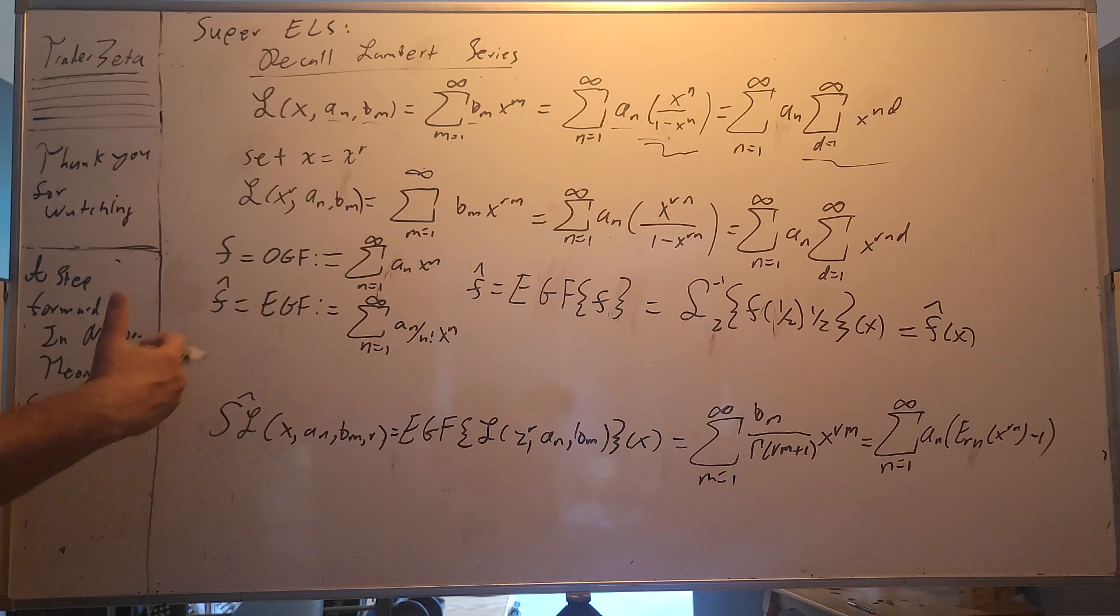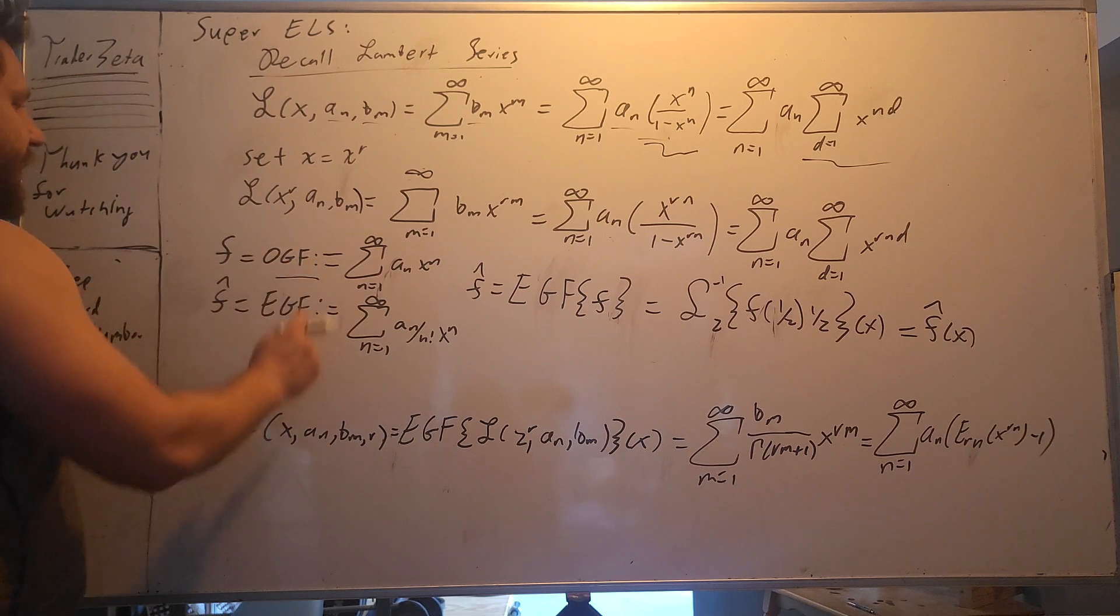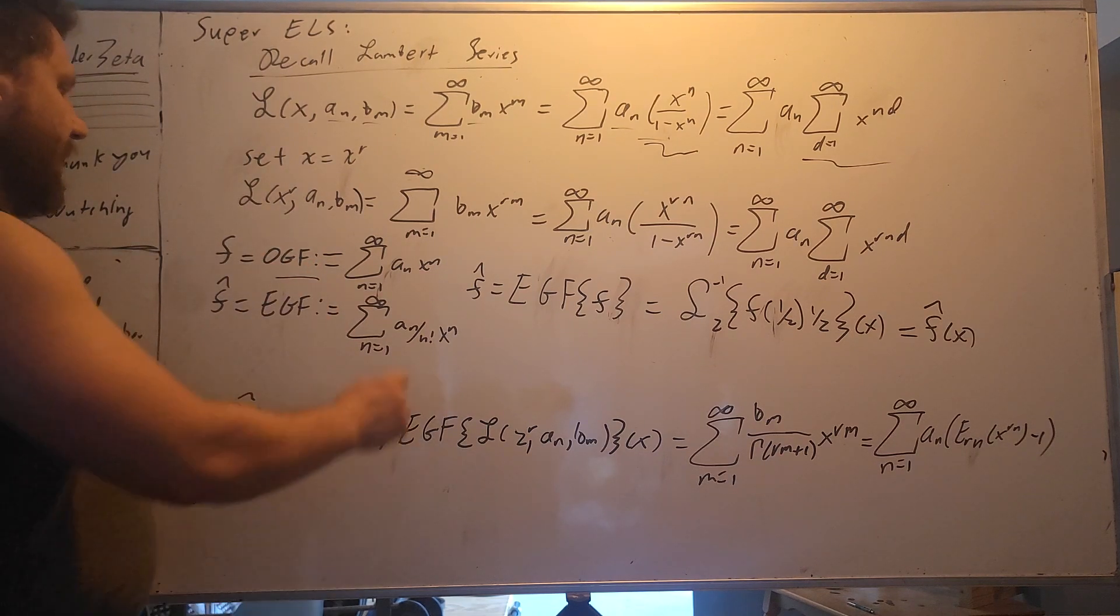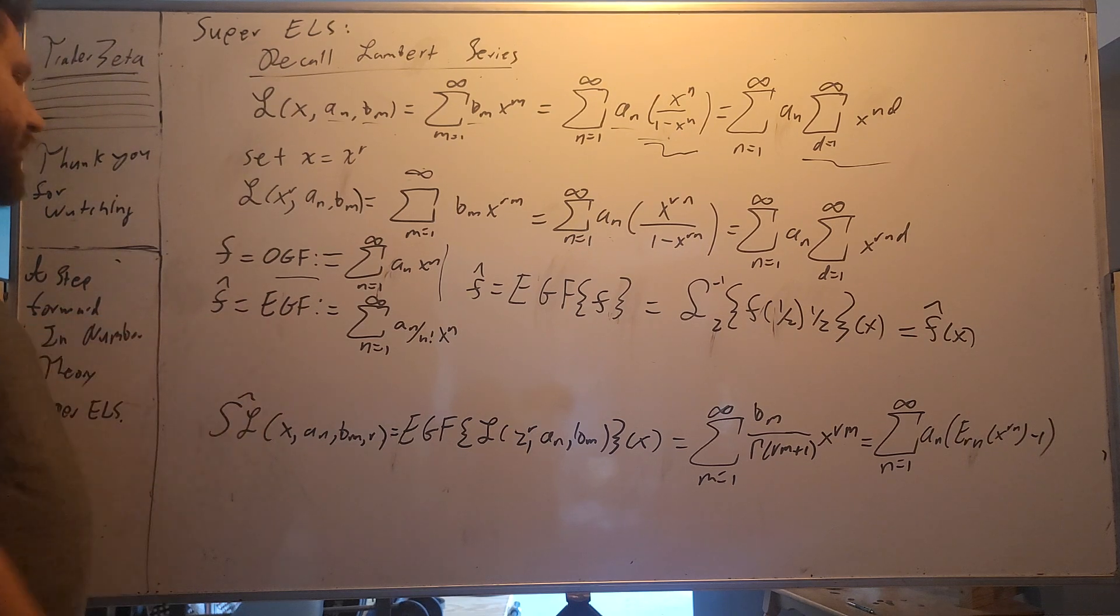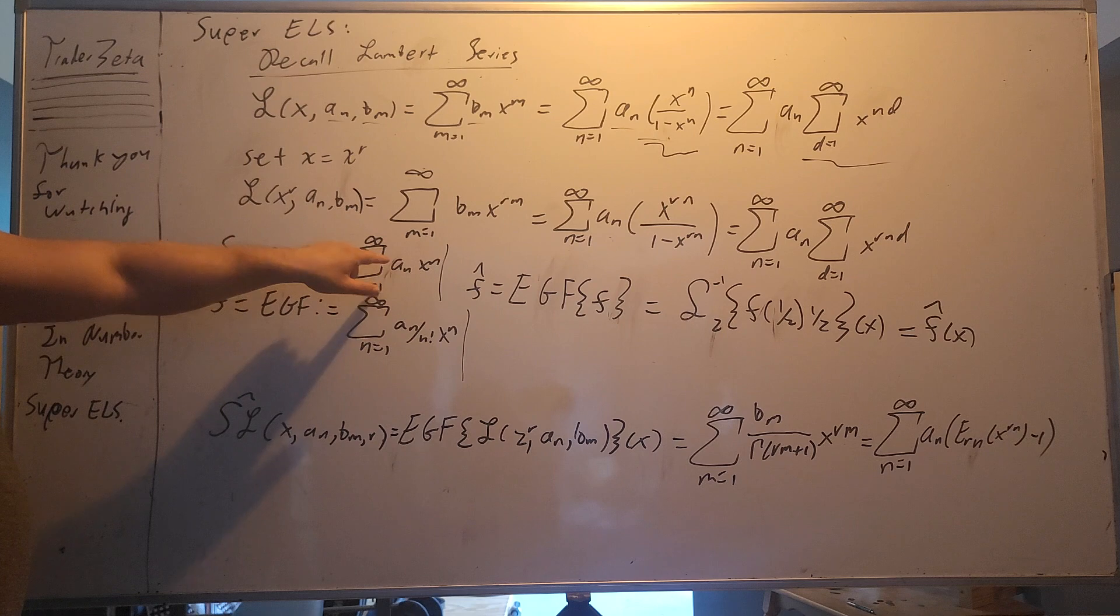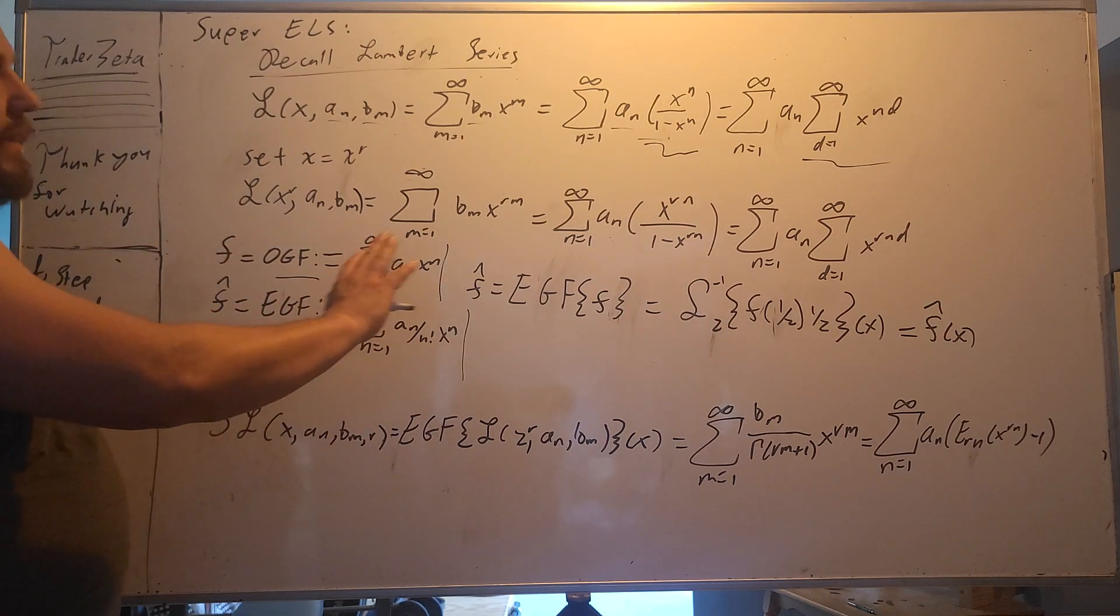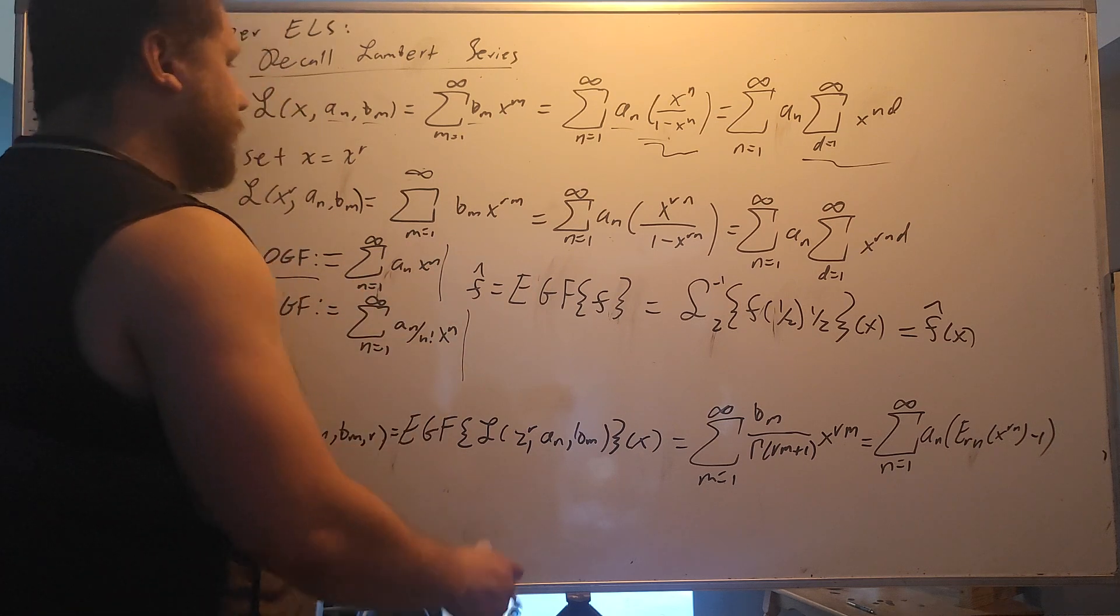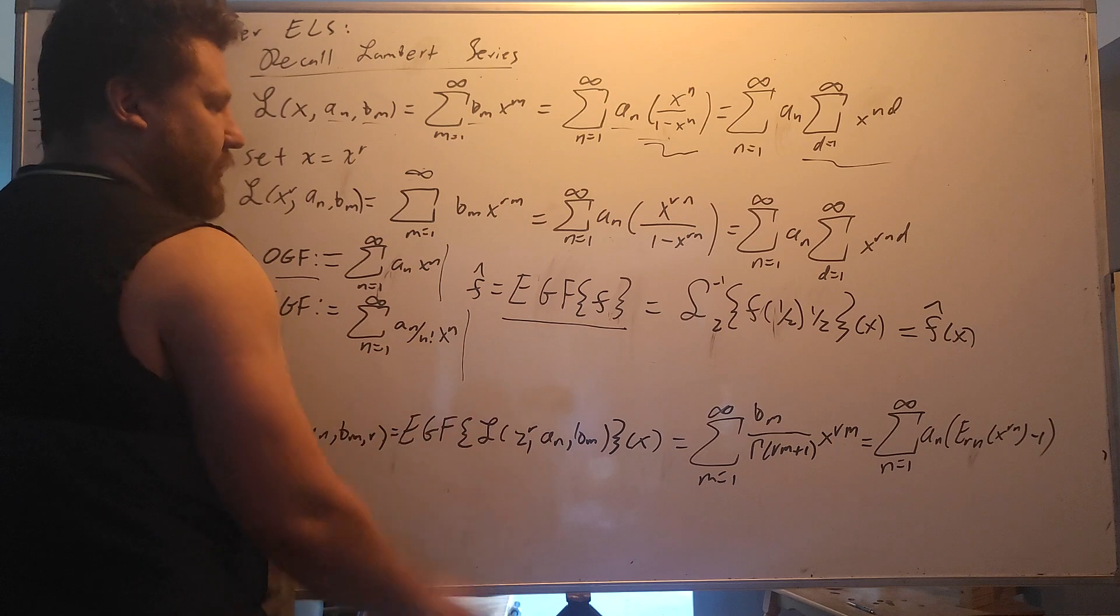And now what we're going to do is we're going to use an EGF transform. If you have not seen this, I've written it out here. This is an OGF, ordinary generating function. If you have an exponential generating function, it comes in the form of this. So the difference between the two is you have the coefficients divided by n factorial.